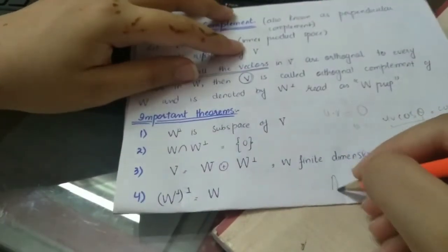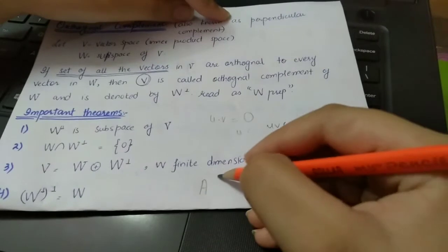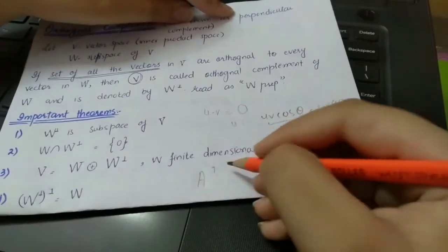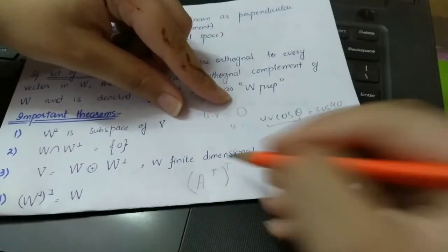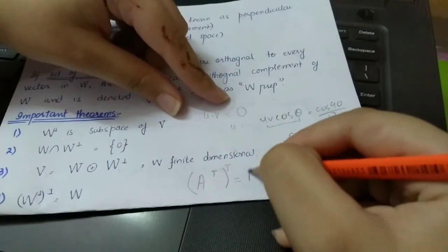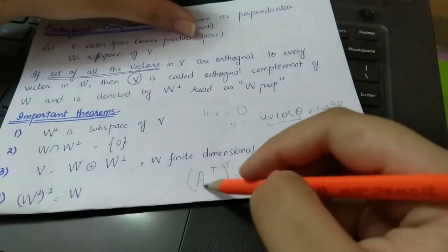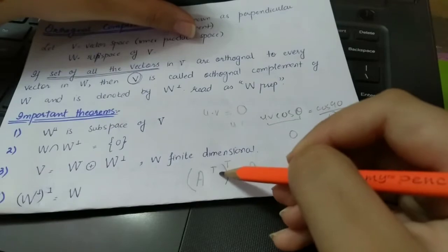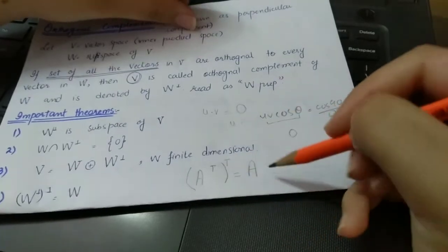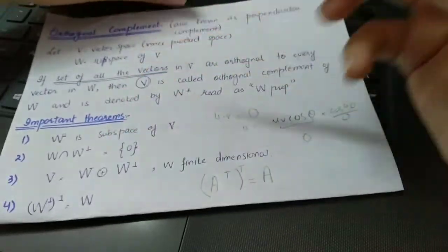Similarly, you may have studied that for a matrix A, if you take its transpose and then take the transpose of the resulting matrix again, you get back the original matrix A. These are four important points to remember.